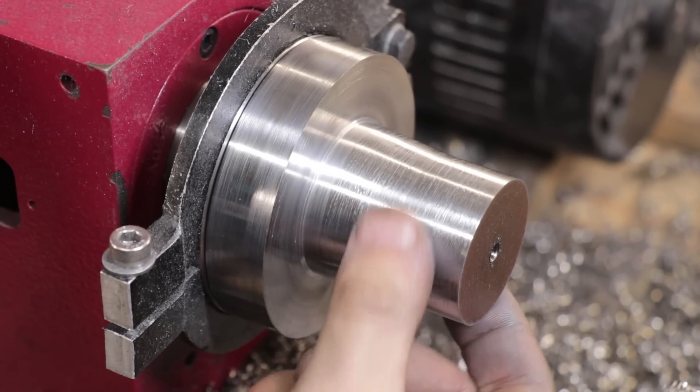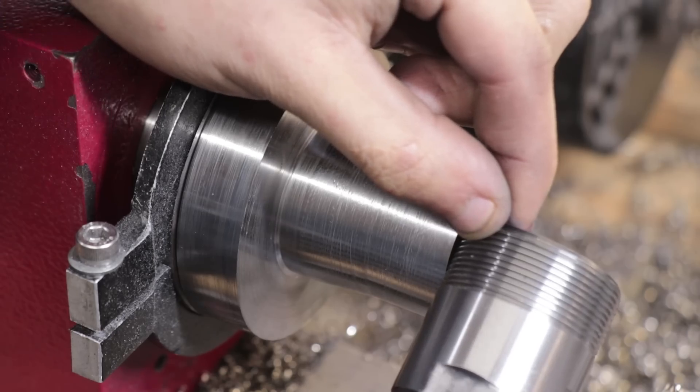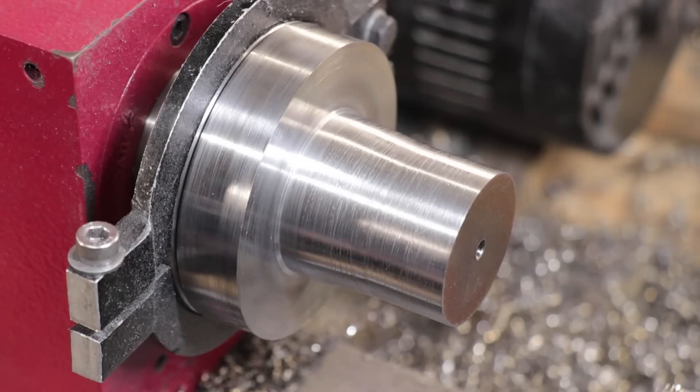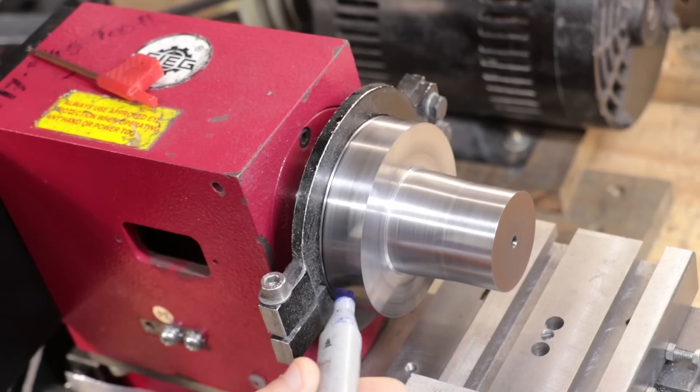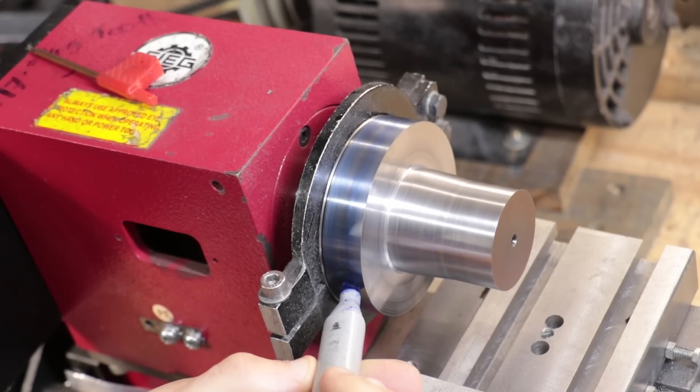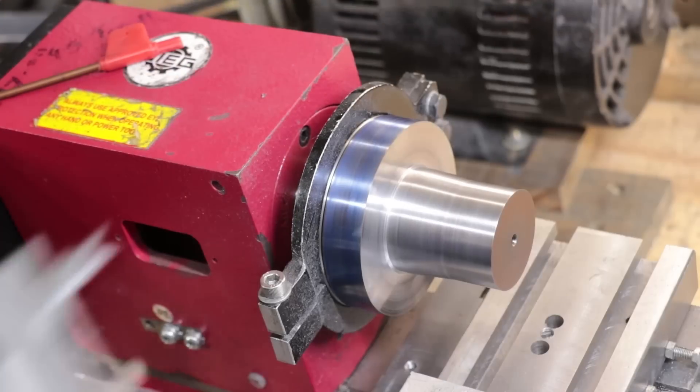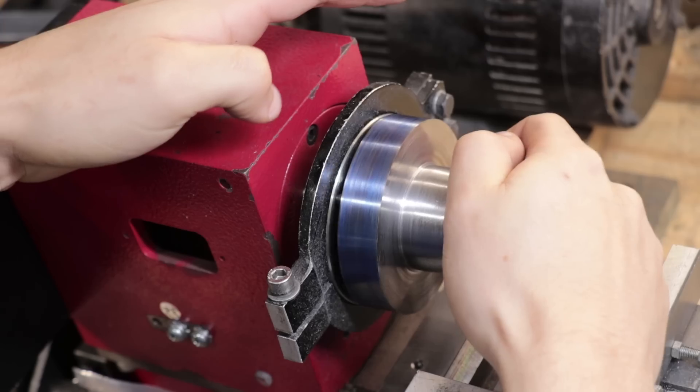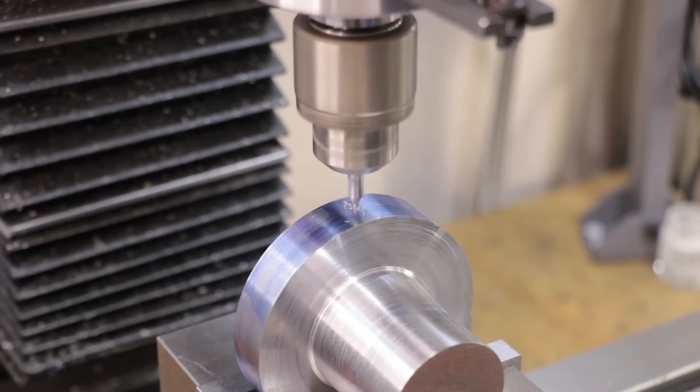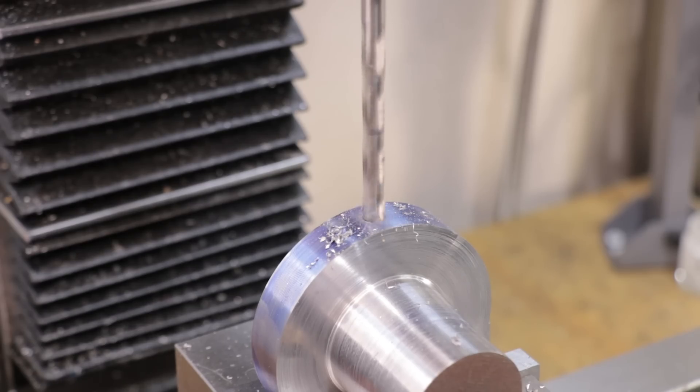With the bulk of the metal gone, I can now cut the M40 by 1.5 thread that matches the collet nut. However, before I do that, I'll quickly take it to the milling machine and drill two holes for a set of tommy bars, which is something that I should have done beforehand but I forgot.